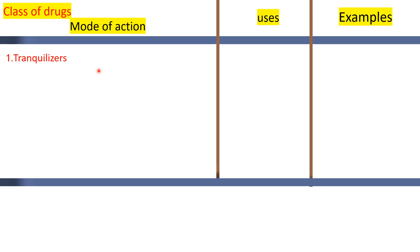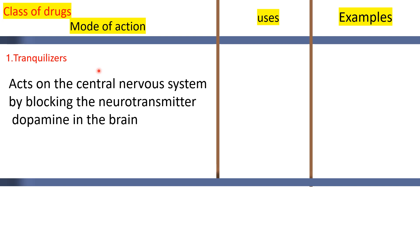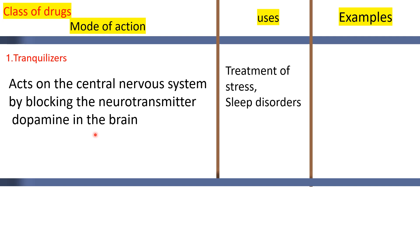Tranquilizers act on the central nervous system by blocking the neurotransmitter dopamine in the brain. The neurotransmitter dopamine is the target. Tranquilizers are used for the treatment of stress and psychotic pressure.